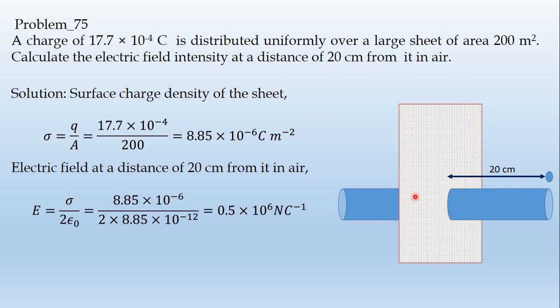One sheet with the charge distributed on it. The surface charge density is located on the surface. This is the area. This is the particular point where the electric field is to be calculated.